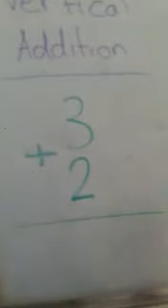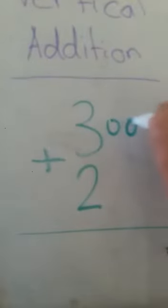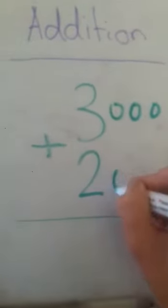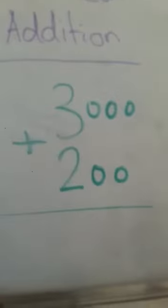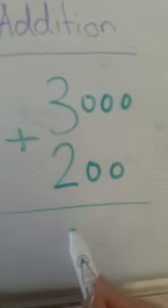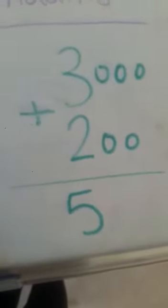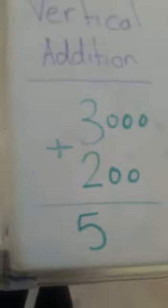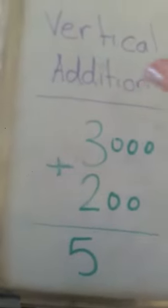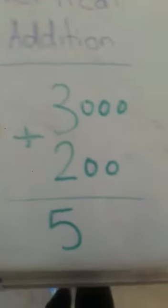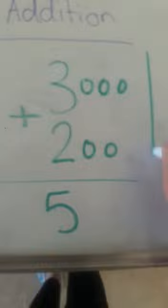Now I can draw counters. Look. I draw three counters next to number three. Two counters next to number two. Now I'll count them in all. One, two, three, four, five. The answer is five. I put it directly under the line. Five in all. So this is all about the vertical addition equation. It goes from top to bottom.